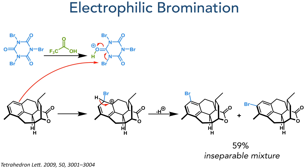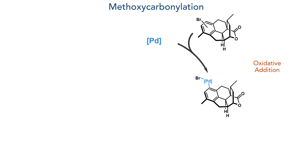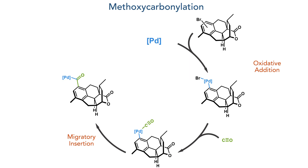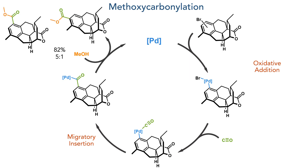This mixture was then subjected to a methoxycarbonylation. Palladium first undergoes oxidative addition into the carbon-bromine bond, and carbon monoxide then adds to this complex. A migratory insertion then occurs, forming the new carbon-carbon bond. Methanol present in the solvent mixture can react with this complex, adding to the carbonyl to form an ester and allowing palladium(0) to be regenerated. This formed a mixture of regioisomers in an 82% yield with a 5-to-1 ratio.